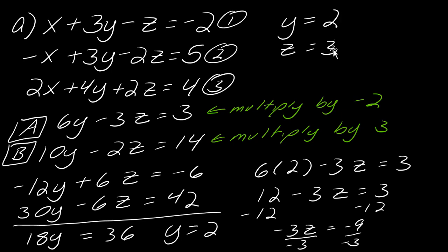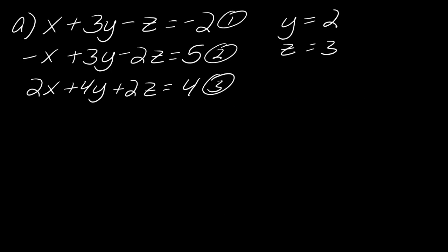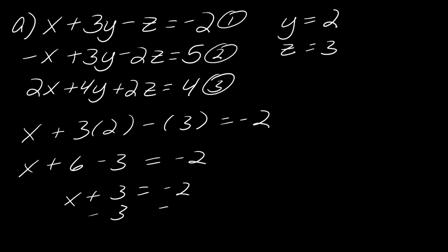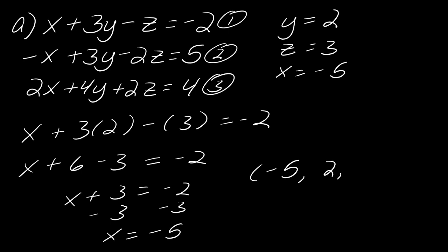Now that I have y and z, I go back to the original system and choose any equation to plug these in and solve for x. I'll plug into the first equation: x plus 3 times 2 minus 3 equals negative 2, so x plus 6 minus 3 equals negative 2, which gives x plus 3 equals negative 2. Subtracting 3 from each side, x equals negative 5.